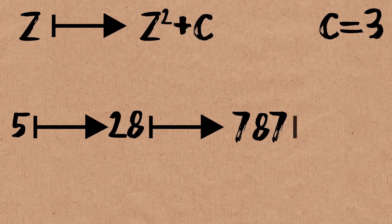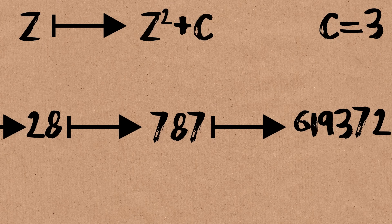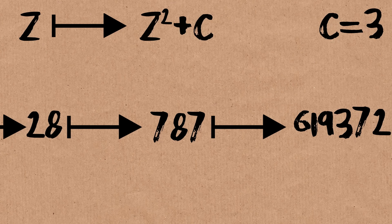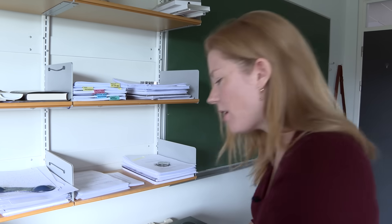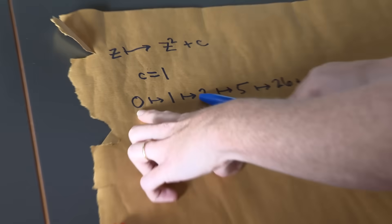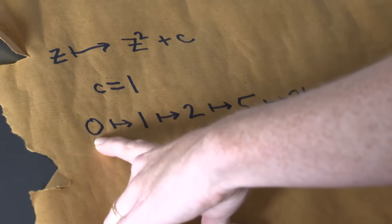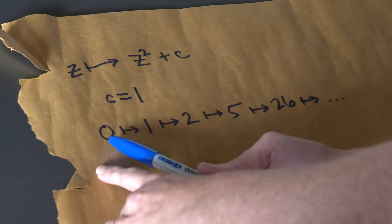kind of what happens a lot of the times with a lot of the ones you try, is these get really big, or maybe they get really small, but in any case, what often happens is when you do this process, you end up with different numbers at each stage. You never come back to 0, for example.